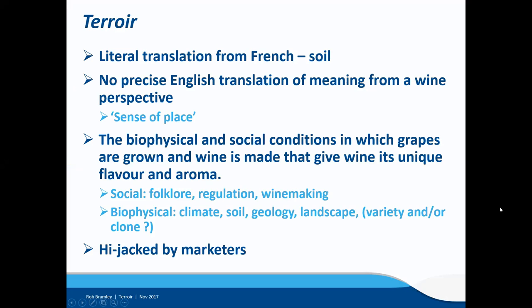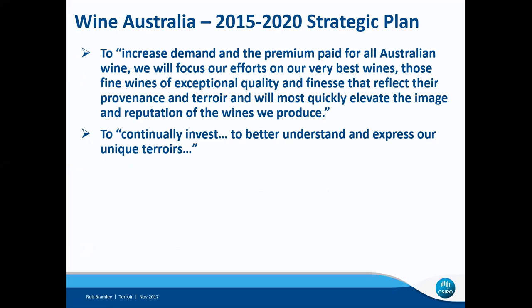I'm structuring this talk around some words that appeared in Wine Australia's 2015 to 2020 strategic plan, in which it was stated that in order to increase demand and the premium paid for all Australian wine, Wine Australia intended to focus its efforts on fine wines of exceptional quality and finesse that reflect their provenance and terroir, and will most quickly elevate the image and reputation of the wines we produce. Wine Australia went on to state that they intended to continually invest to better understand and express our unique terroirs.